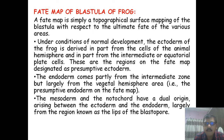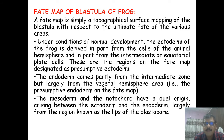The ectoderm is formed from cells towards the animal hemisphere and some cells from the equatorial plate. The endoderm comes partly from the intermediate zone but largely from the vegetal hemisphere area. On the Fate Map, the presumptive endoderm has its maximum area from the vegetal hemisphere and some from the intermediate zone.